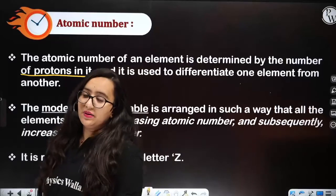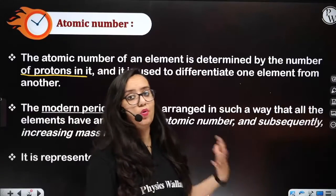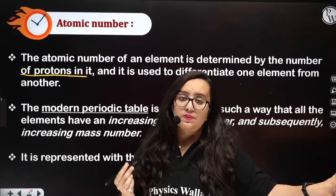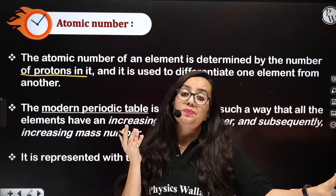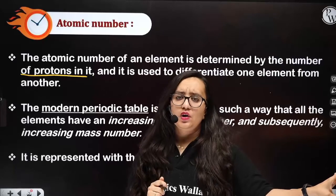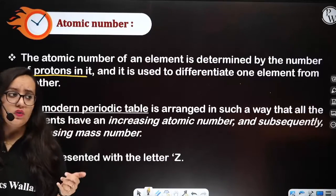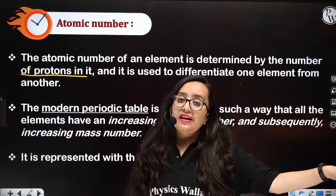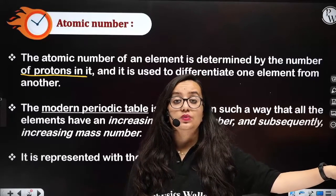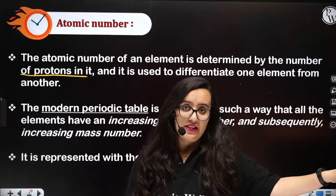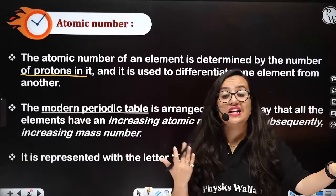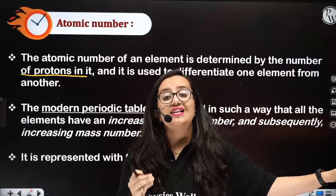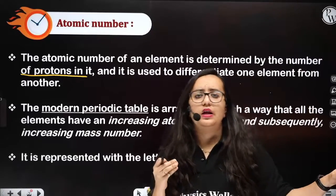So what is actually atomic number? It is the number of protons present in that particular atom. You may ask why only protons — why not neutrons or electrons? There are atoms in which the number of protons and neutrons are not the same. The number of neutrons can increase or decrease, so we cannot use neutrons as the basis to determine atomic number.